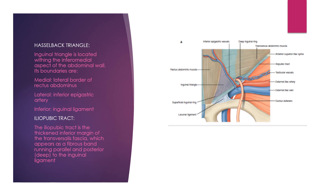Hesselbach's triangle (the inguinal triangle) is formed between the inferior epigastric vessels laterally, the lateral margin of the rectus abdominis medially, and the inguinal ligament inferiorly. This is the weak part of the anterior abdominal wall where the superficial inguinal ring is located.